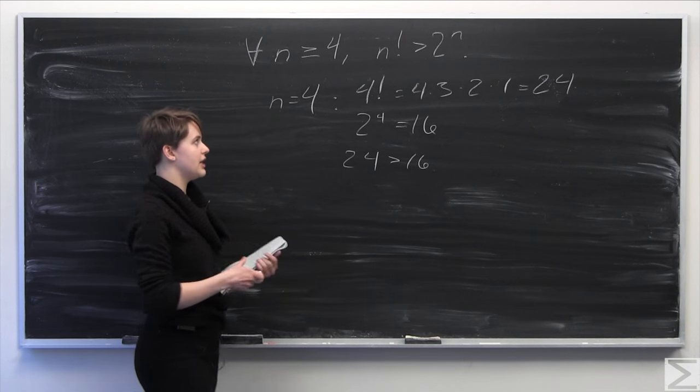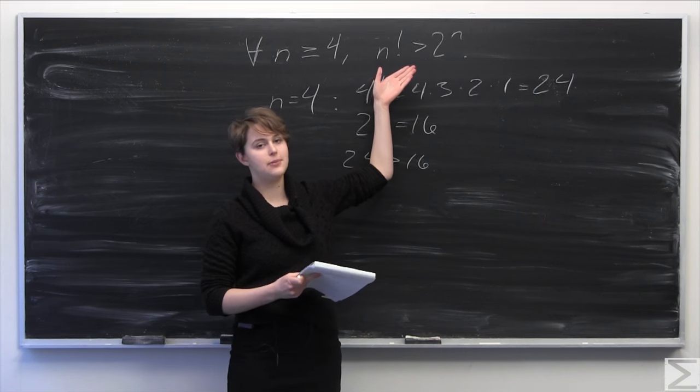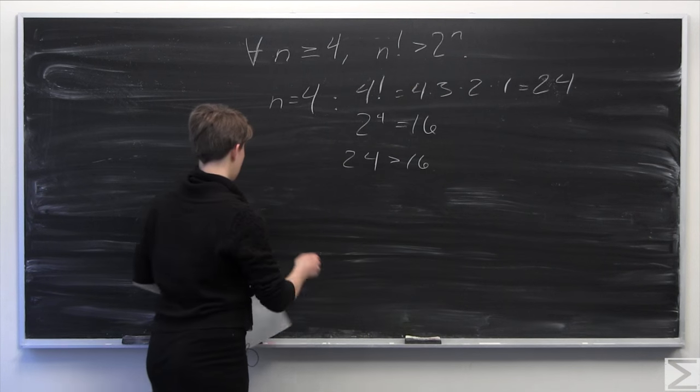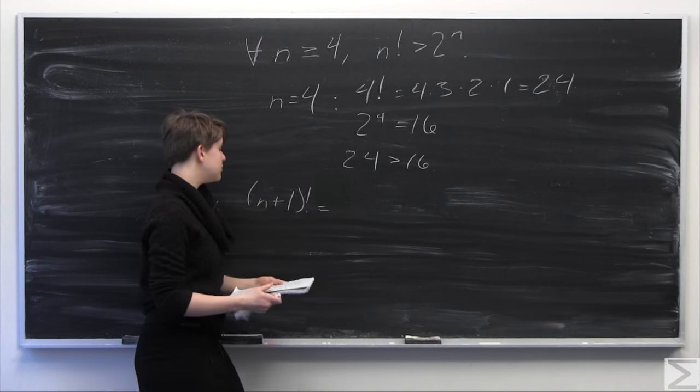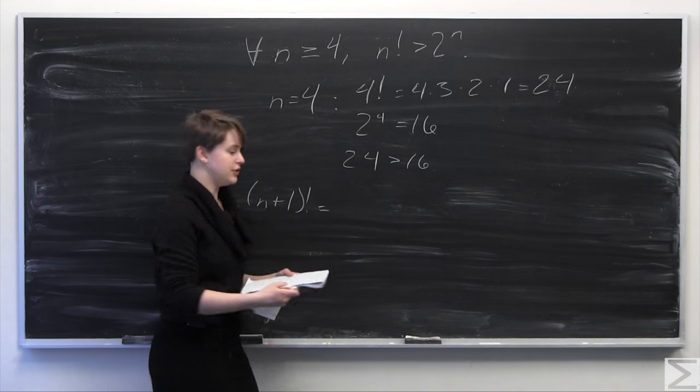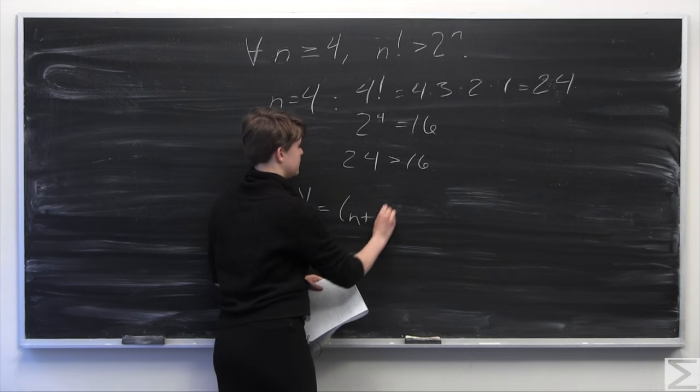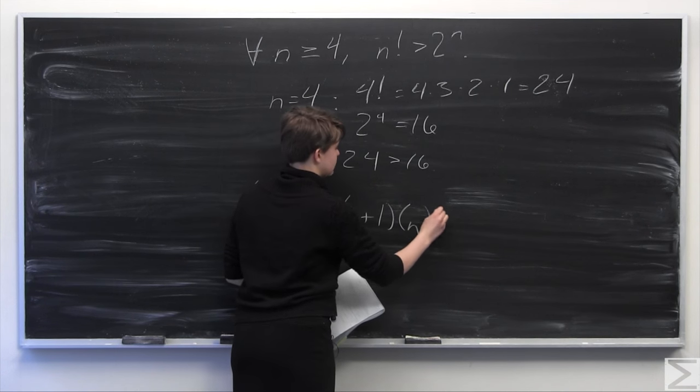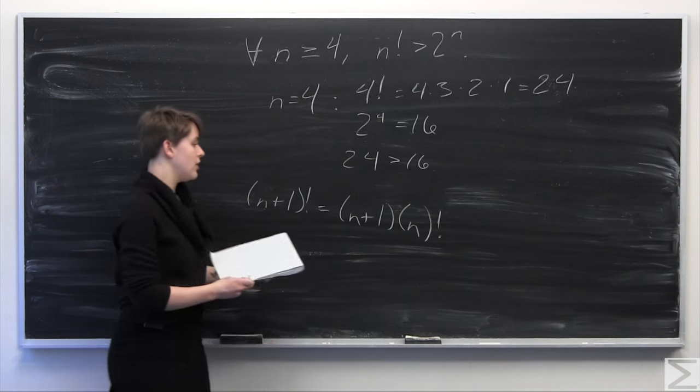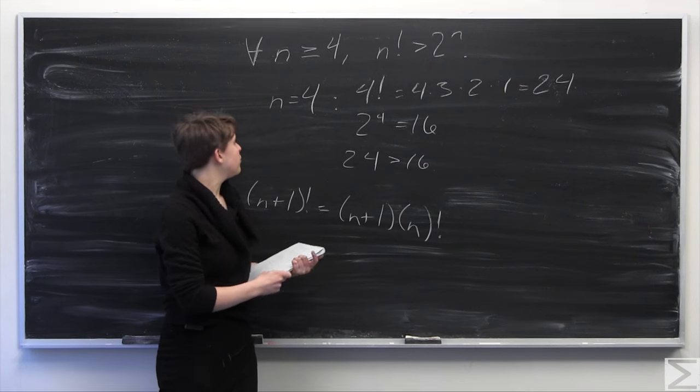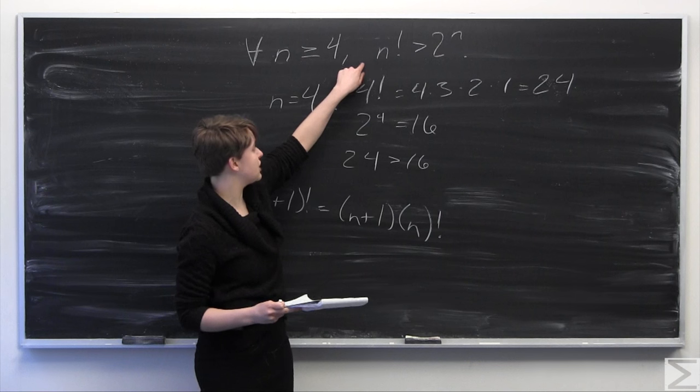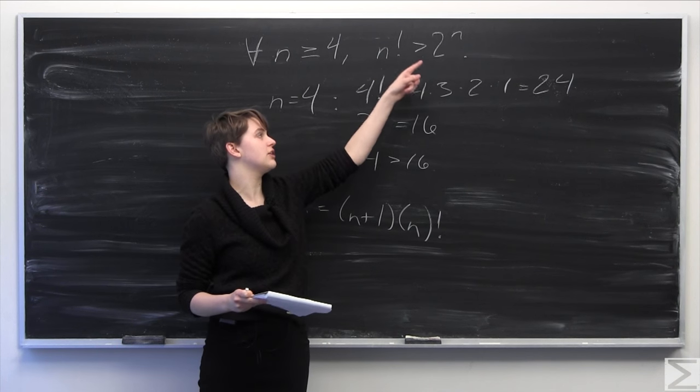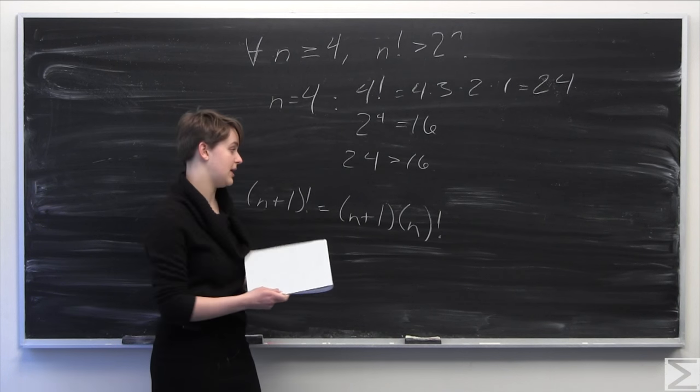So we're going to go ahead and start from the left-hand side here. We're going to plug in n plus 1 into n factorial. So we're going to take n plus 1 factorial, which we know is equal to, by the definition of the factorial, n plus 1 all times n factorial. So we know from our induction hypothesis,